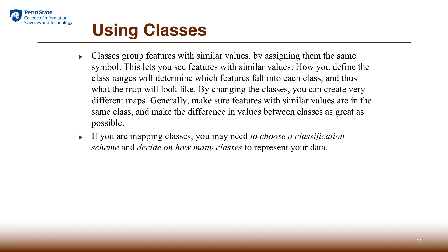Mapping classes requires us to first classify the features into classes. We can choose to do this one of two ways. The first way is to manually choose some kind of interval so that we can form a number of classes around the range of values in the data — this works well if we know the criteria we want to define. In other cases, we may not know exactly what classes we want to form, so we may use standard pre-designed classification schemes to see whether any patterns emerge.